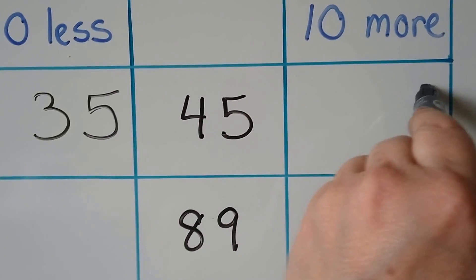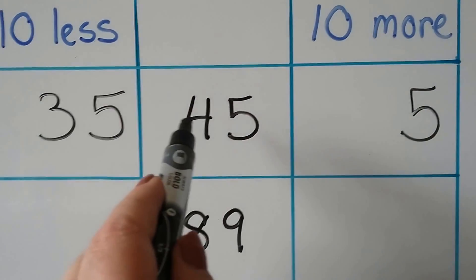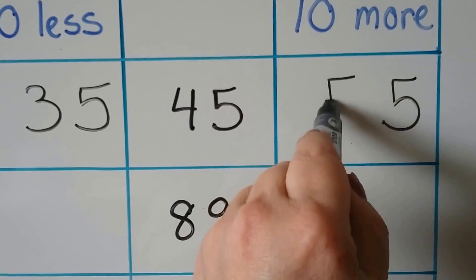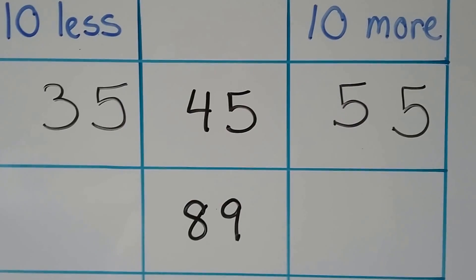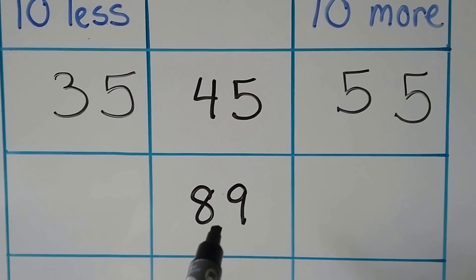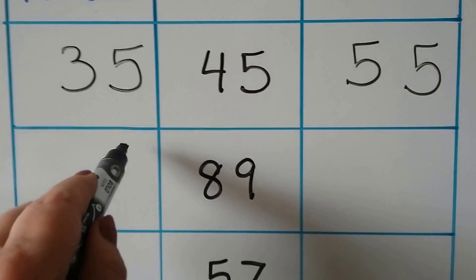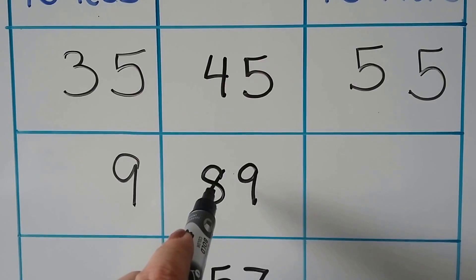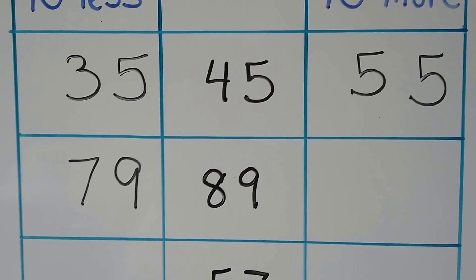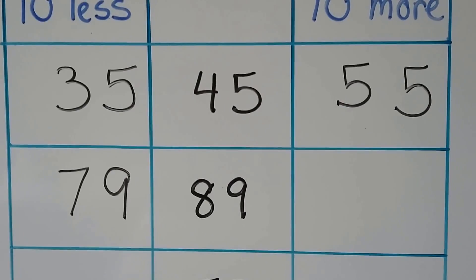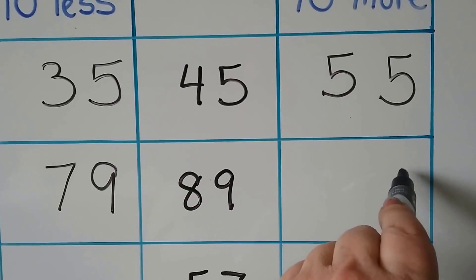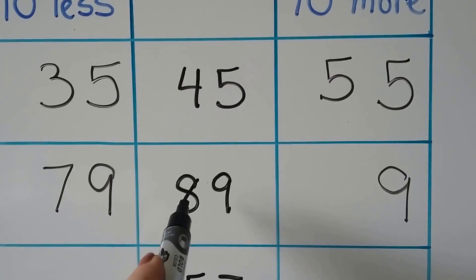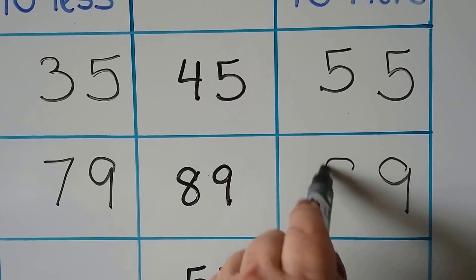10 more than 45: the ones are going to stay the same, we'd add 1 more 10 — so instead of a 4 it's going to be a 5, so 10 more is 55. For 89: 10 less — the ones stay the same and 1 less than 8 is 7, so 79 is 10 less. 10 more — instead of 8 we'll have 9, so 99.